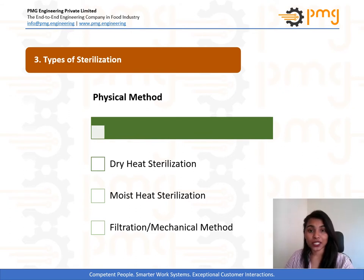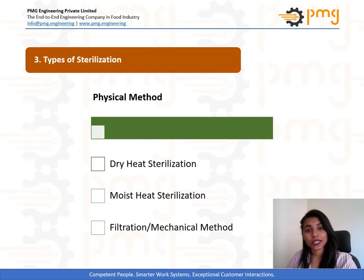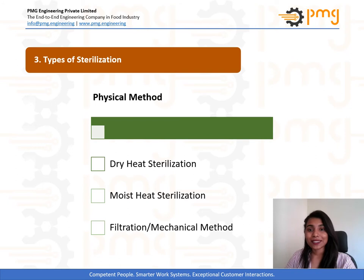In physical method, dry heat sterilization employs higher temperatures of about 160 to 180 degrees Celsius. It has the benefit of good penetrability and non-corrosive nature, making it applicable for sterilizing glassware and instruments. The drawback is it can only be used for thermostable products. The second type, moist heat sterilization, involves 121 to 134 degrees Celsius and gives best results under pressurized conditions, acting as an effective sterilizing agent.